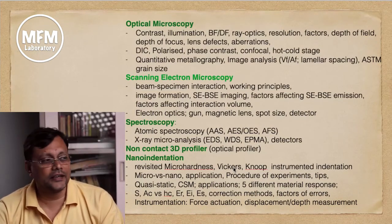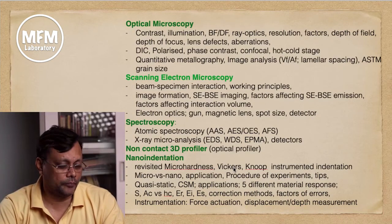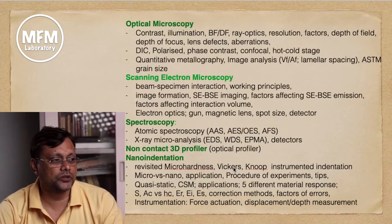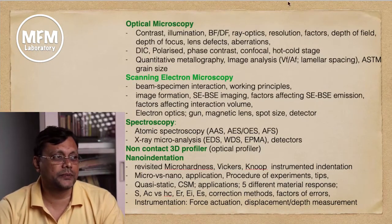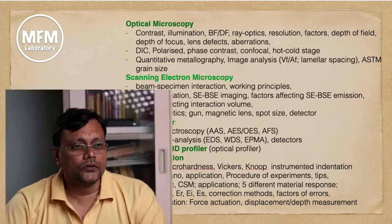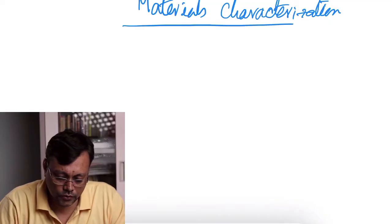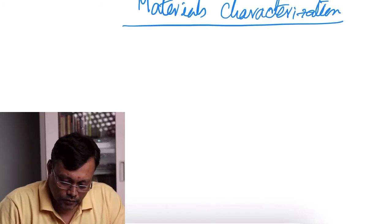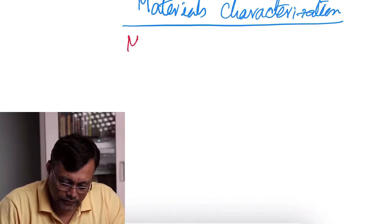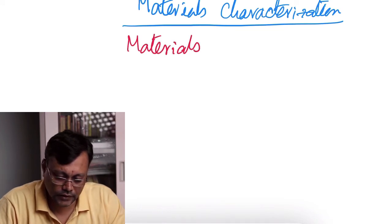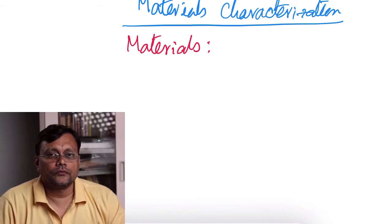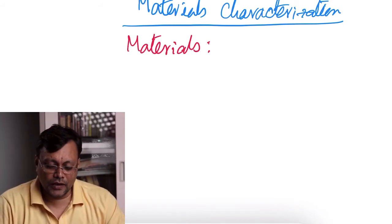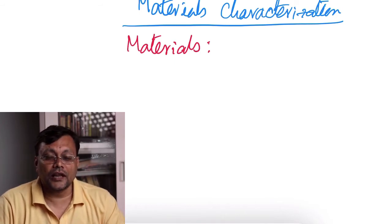Instrumentation parts are also important — force actuation and depth measurement are very important aspects of this subject. So far, we have looked into the most important aspects of this subject. Materials Characterization deals with materials, which from your first and second year classes you know are classified into metals, alloys, ceramics, polymers, and if you combine any of these two, we can develop composites, which are also important in today's context.